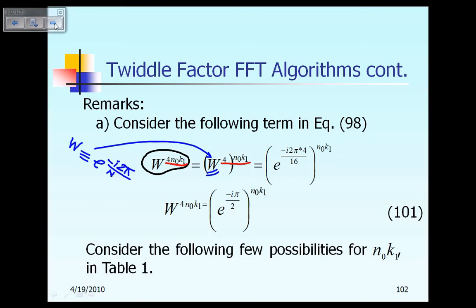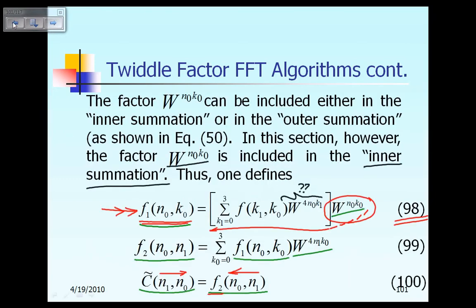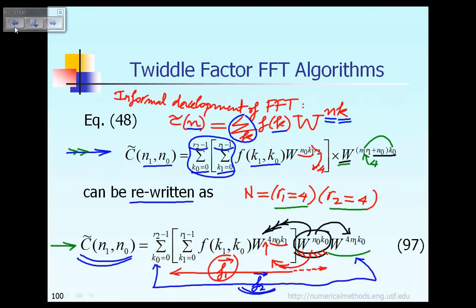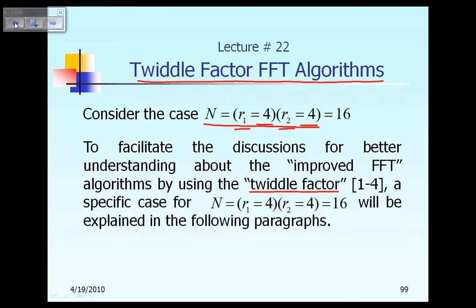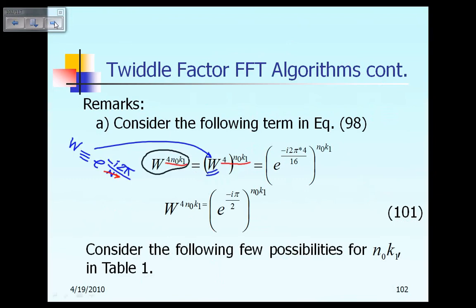Remember, capital N in this case means R1 times R2. The value of capital N is equal to R1 times R2, where R1 and R2 each equal to 4. So capital N is equal to R1 times R2, which is the same as 16. That is the value of capital N.